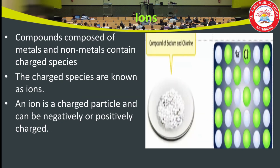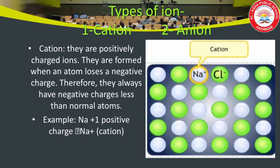What are ions? Compounds composed of metals and non-metals contain charged species, and these charged species are known as ions. For example, NaCl — sodium chloride. Sodium is a metal and chlorine is a non-metal. When the compound NaCl is forming, we can see two charged species: Na+ and Cl−. So an ion is a charged particle and can be negatively or positively charged.